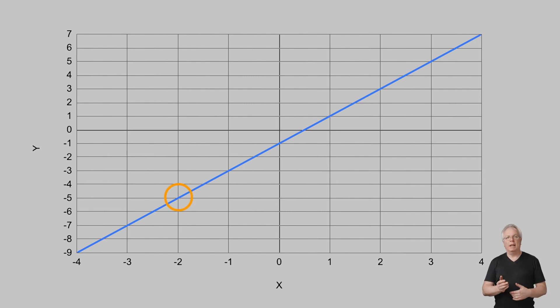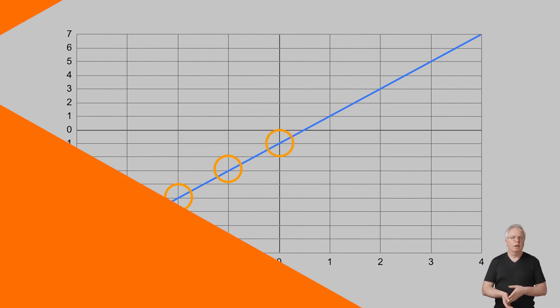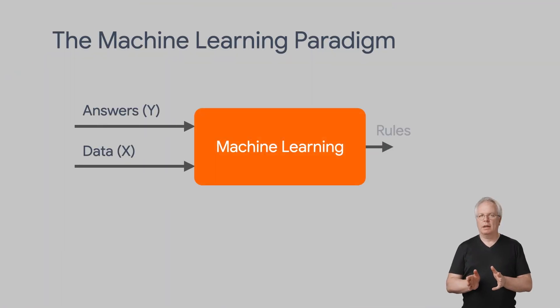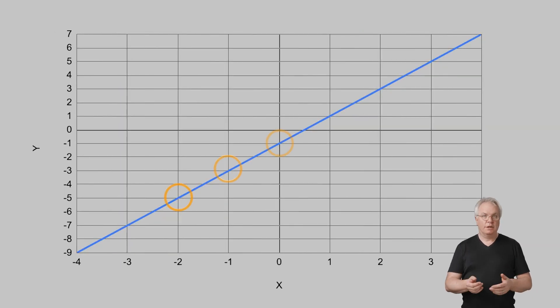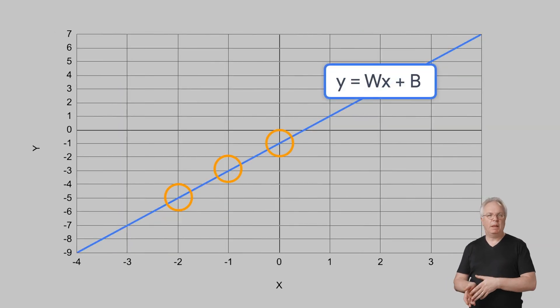Well, I could start by listing out a few values like this. So when x is minus 2, y is minus 5. When x is minus 1, y is minus 3. When x is 0, y is minus 1, and so on. If I think about it this way, x is my data, y is my answer. I need to figure out the rules that will get me my y from my x. It's a line, so I know that y equals wx plus b. Thus, if I can figure out what w and b are, I'll have the rule that gets me my answer from my data to give me a line, right?